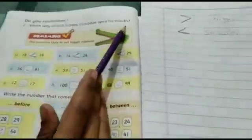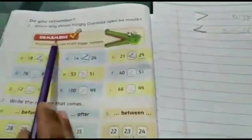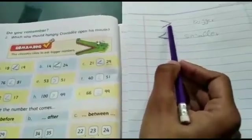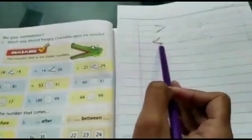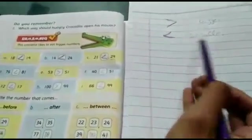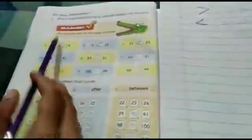Now moving to page number 2. Do you remember which way should the hungry crocodile open his mouth? The question is: which way does the hungry crocodile want to open? Remember, this crocodile likes to eat the bigger number. This is the bigger sign and this is the smaller sign. Where the hungry crocodile's mouth is open, that's bigger. Where his back is, that's smaller.